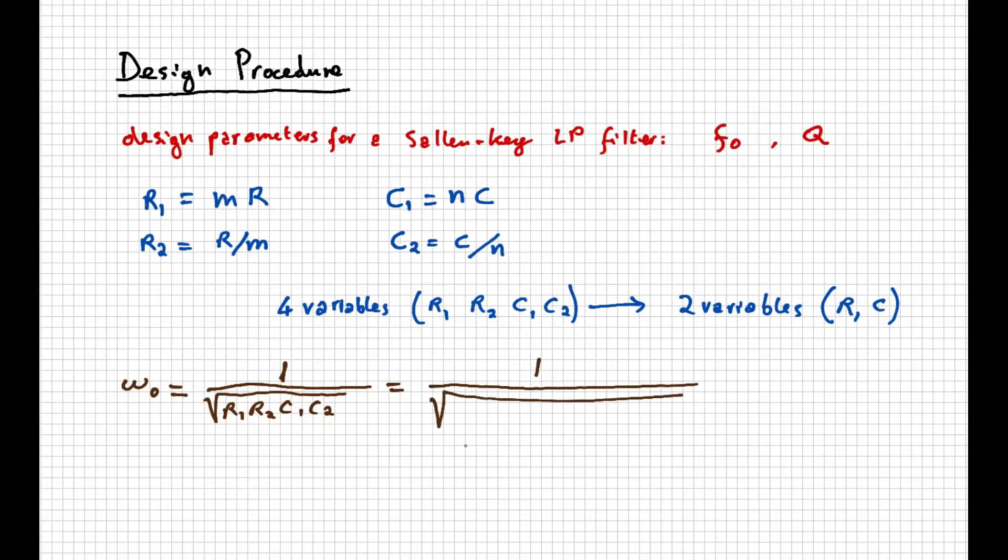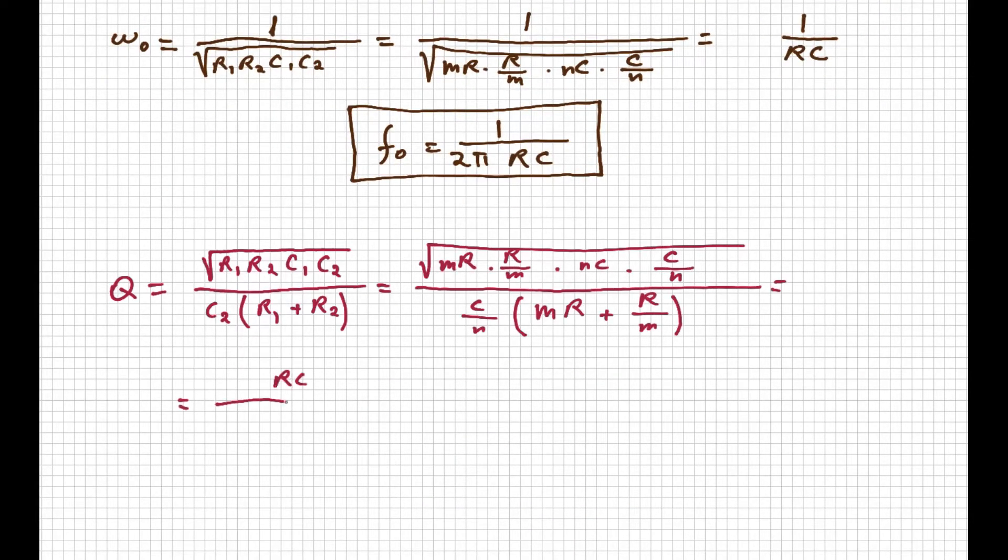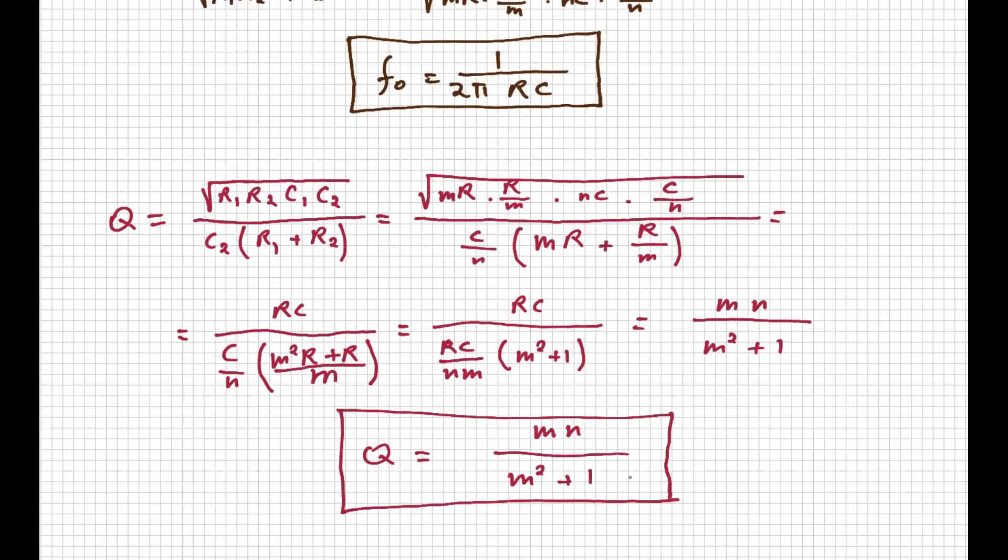Thanks to m and n, we now need to work only with one resistor, R, and one capacitor, C. Let's see how all our equations can be written in these new terms. This is for ω0, and therefore for the cutoff frequency, and this is for the Q-factor.